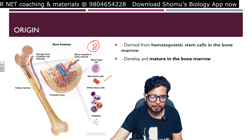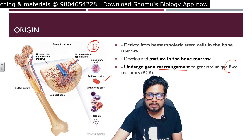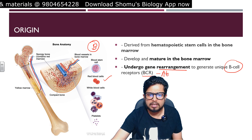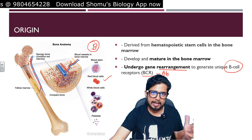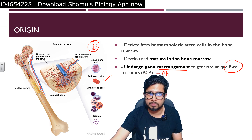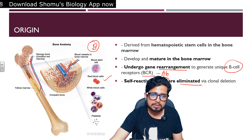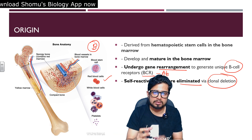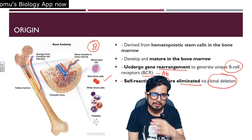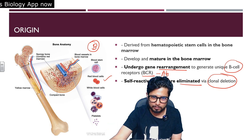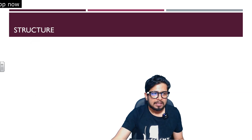B cells undergo gene rearrangement to generate unique B cell receptors, or BCRs, which are essentially antibodies. Different B cells have different receptors, so BCRs vary from cell to cell. Self-reactive B cells — those targeting the body itself with self-reactive antibodies or BCRs — are eliminated during the maturation process via a process known as clonal deletion.